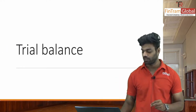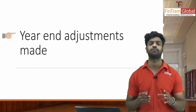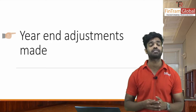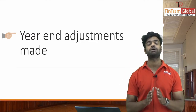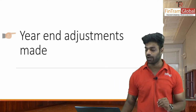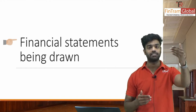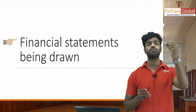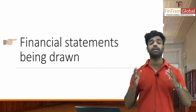Once the trial balance is complete, we have to do our year-end adjustments on the trial balance. When all year-end adjustments are done and your trial balance matches, the final step is drawing the financial statements — the balance sheet, statement of profit and loss, statement of changes in equity, statement of cash flows, and notes and disclosures. These are our financial statements, and these are the steps to create them.